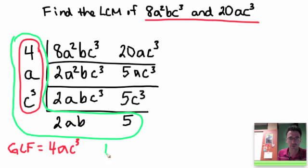So the LCM is, I'm going to organize this a little bit differently, I've got 4 times 2 times 5, those are the numbers, and then I have ac cubed and ab, so I put those, the variables, at the end. So let's multiply those: 4 times 2 times 5, 2 times 5 is 10, times 4 is 40.